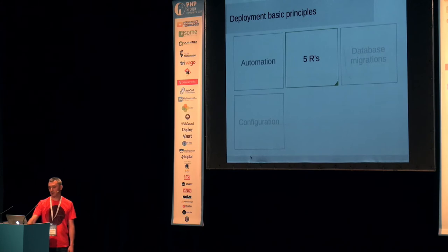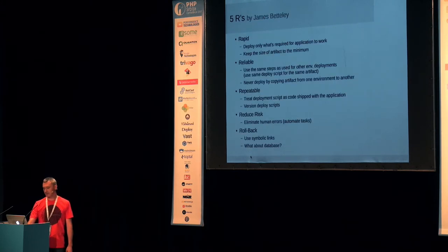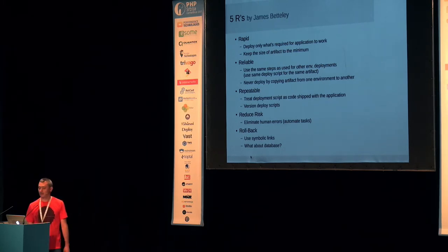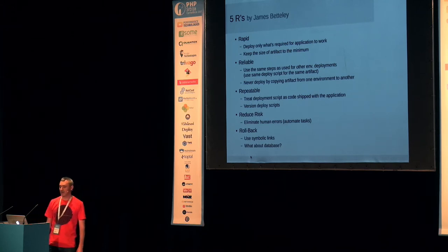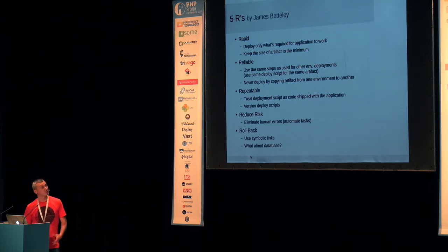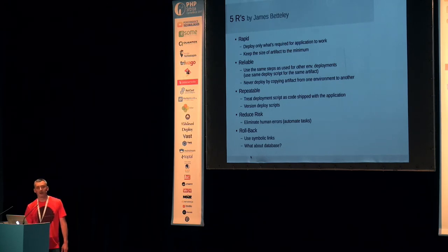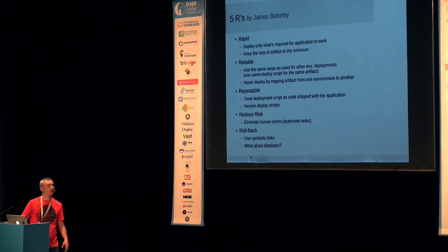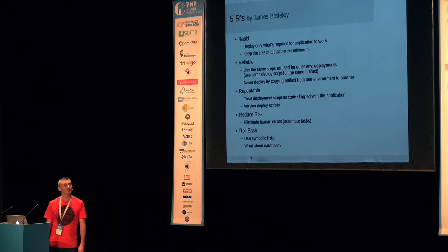Next — the five R's. What are the five R's? There's a really good article by James that can be found on ecsln.com, and there he gives a definition of this five R's mnemonic. The first R is Rapid. You should keep your deployment as fast as possible — don't do anything not really necessary for that process. For example, when you do your build, you shouldn't include things required only for development. You should also minify your assets like JavaScript and CSS.